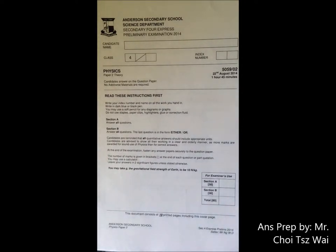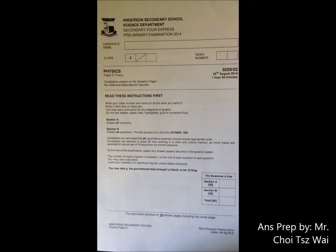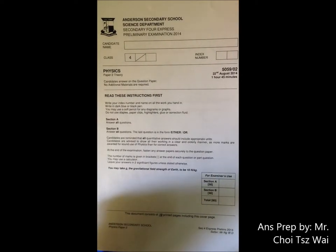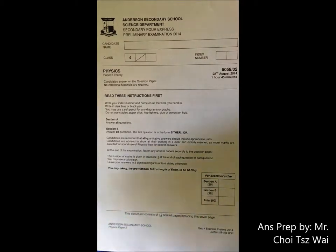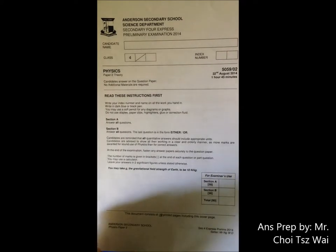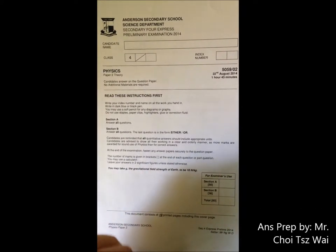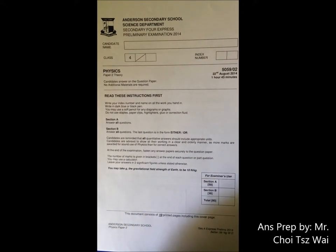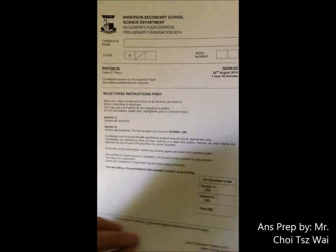We'll continue with Anderson's Prelim 2014 Paper 2. Average difficulty is quite okay. I think you should be able to get an A if you have studied. Not much difficult questions, but I think you need to be very careful with the words you use to explain the different contexts of the question. Let's have a look.